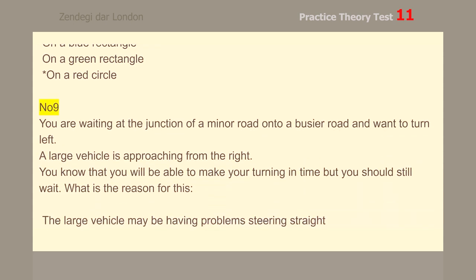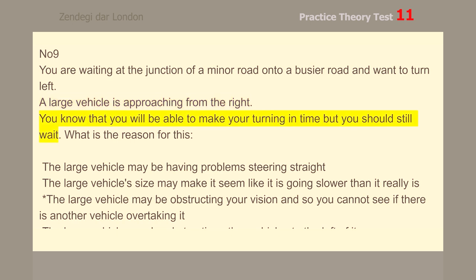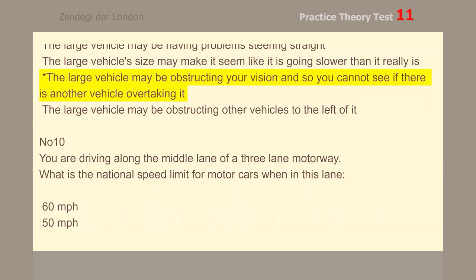Number 9. You are waiting at the junction of a minor road onto a busier road and want to turn left. A large vehicle is approaching from the right. You know that you will be able to make your turning in time, but you should still wait. The large vehicle may be obstructing your vision, so you cannot see if there is another vehicle overtaking it.